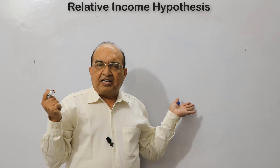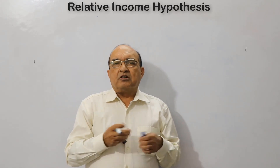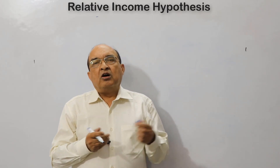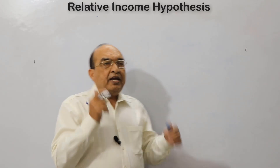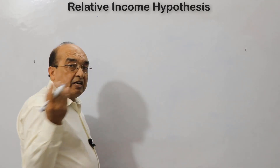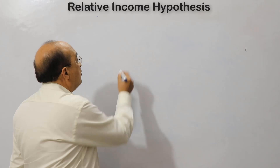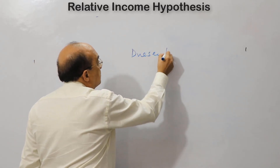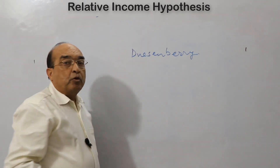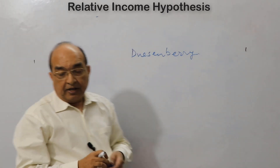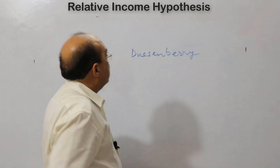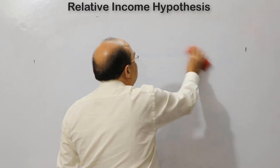Several hypotheses were proposed to address this puzzle. We have already discussed the life cycle hypothesis of Modigliani in this EZ Classes series. Today I am going to discuss the relative income hypothesis of Duesenberry.